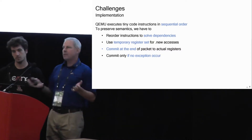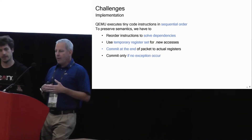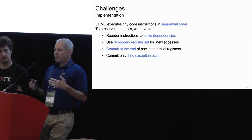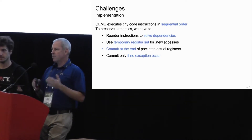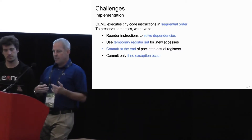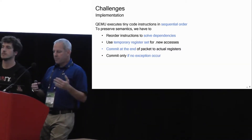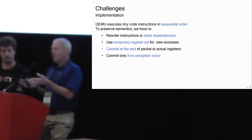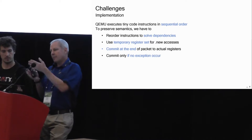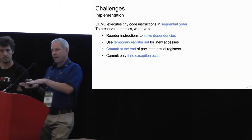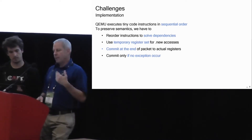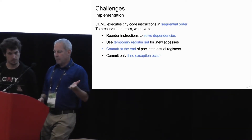How do we deal with this? For packet semantics, sometimes we have to reorder instructions, so there's analysis done on the packet to determine the order for generating TCG code. We use a temporary register set for all destinations, then process that after all instructions in the packet have been processed, writing back to normal state at the end. We commit only if there are no exceptions.